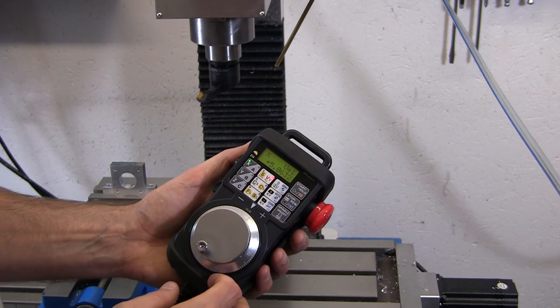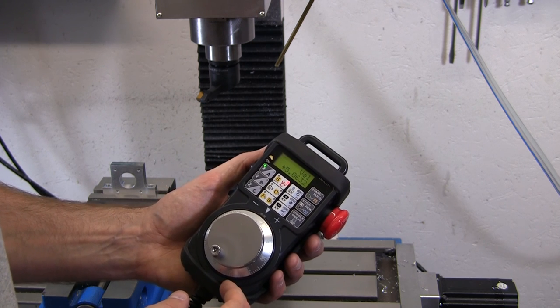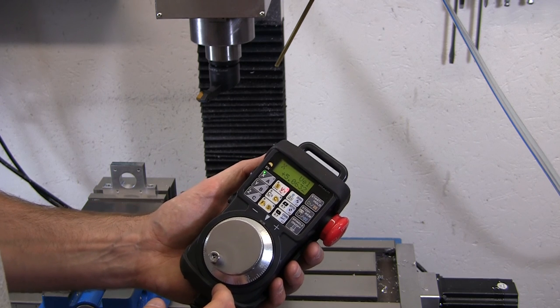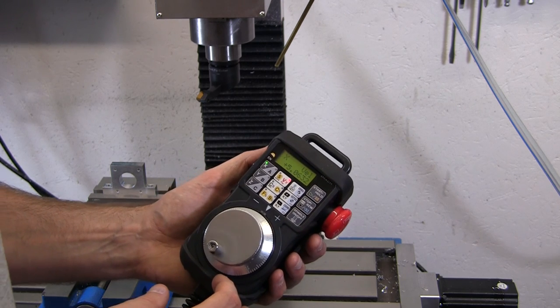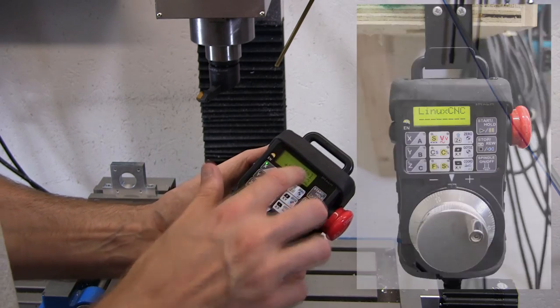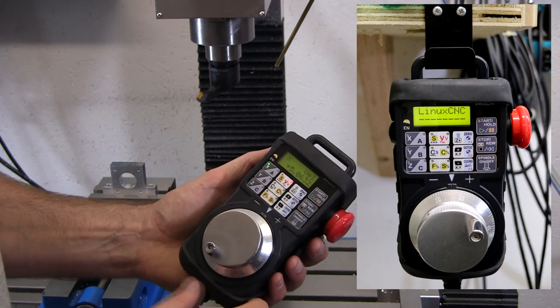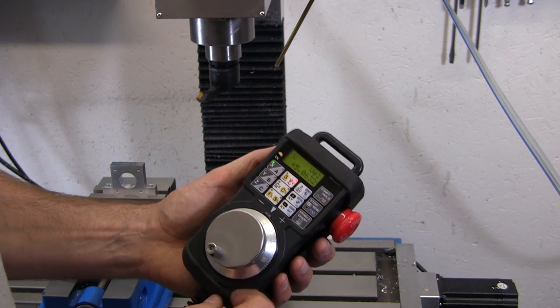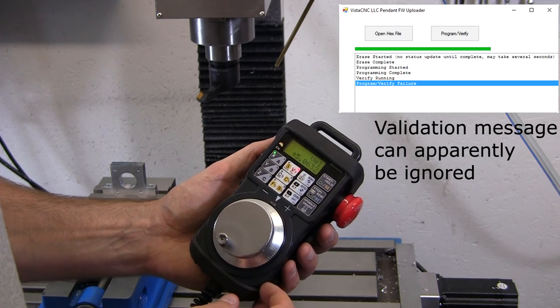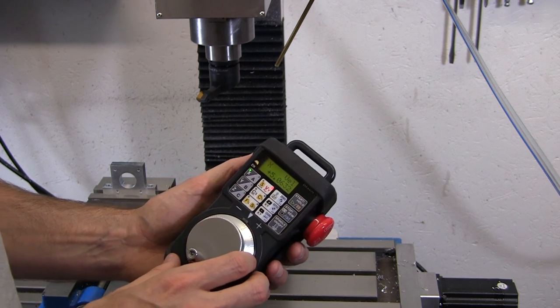The pendant works really well with Linux CNC. When you get it, it may be pre-configured for Mach 3, and you'll have to flash the firmware on the pendant to make it compatible with Linux CNC. You'll know if it's compatible with Linux CNC because when it starts up, it'll say Linux CNC across the top of the display. If it says anything else, then it's probably not configured for Linux CNC. You'll need a Windows computer in order to flash the firmware. Other than that, this is a really great option for a controller.